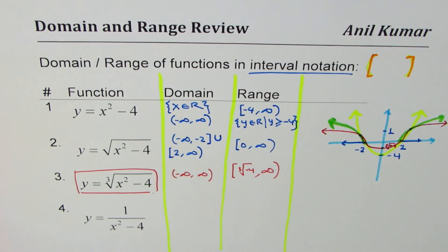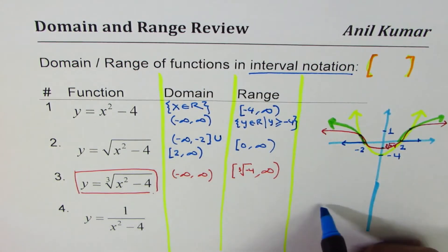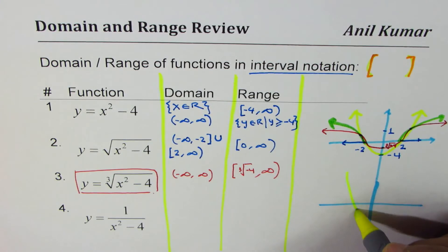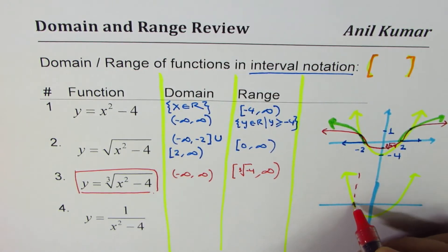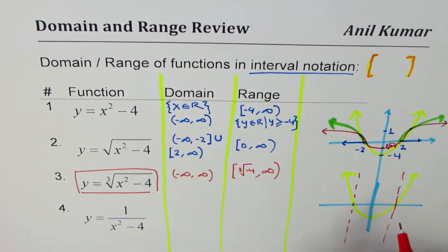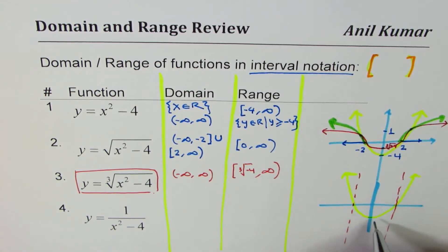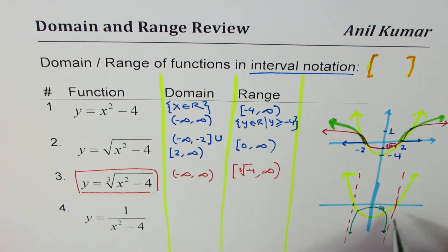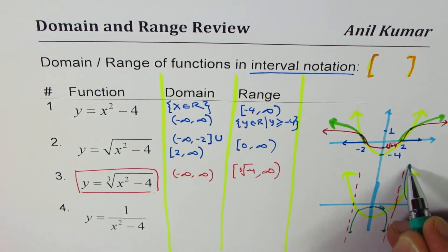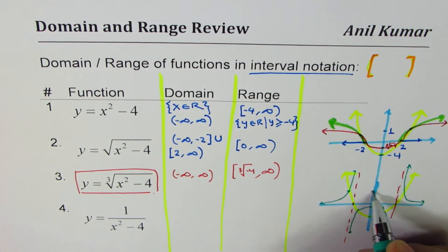Now let's do 1/(x² - 4). We'll sketch x² - 4 again. Where the denominator equals 0, we get vertical asymptotes — at x = -2 and x = +2. At x = 0, 1/(0 - 4) = -1/4, which gives a point on the graph. The reciprocal graph will curve upward on the outer regions and downward between the asymptotes, intersecting at approximately -1.